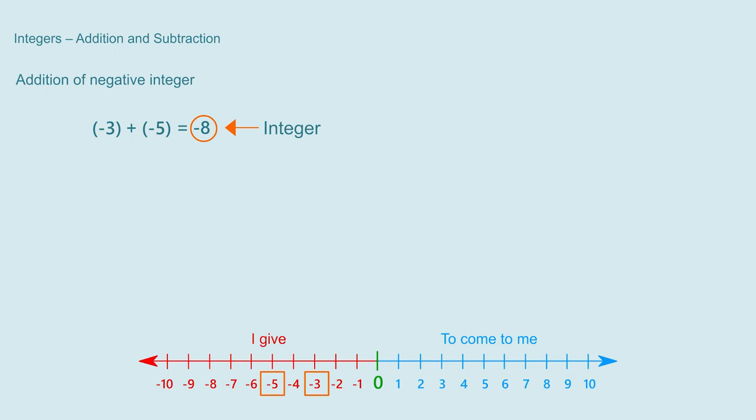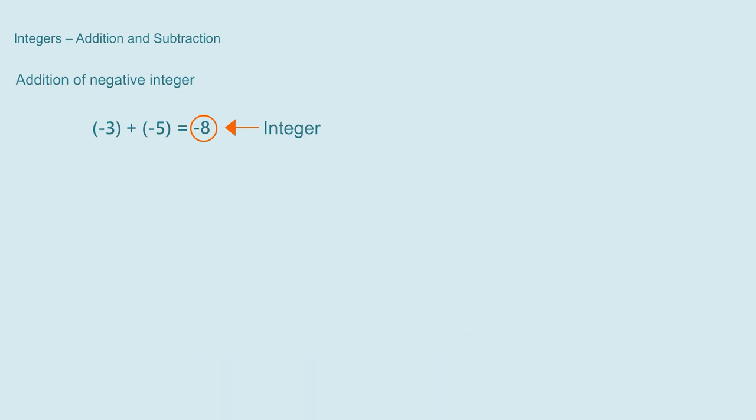This means that if we add a positive or negative integer with another positive or negative integer, the answer we get is always an integer. Now if we add 0 with an integer, then if I had some rupees with me earlier and I get 0 rupees — meaning I didn't get anything — I will have the same amount as before. So we understand that if we add 0 to any integer then we get the same integer back. The sum of any two integers will always be an integer.